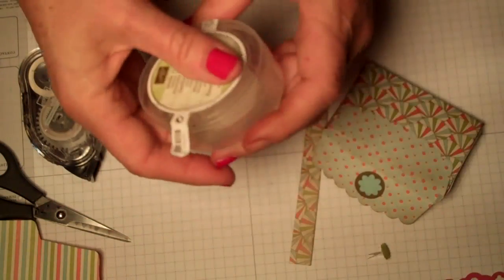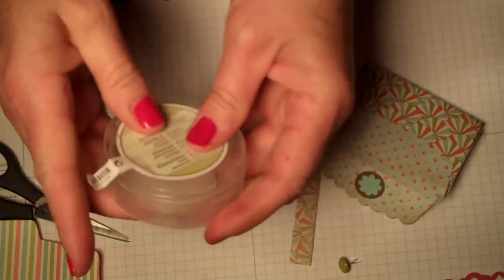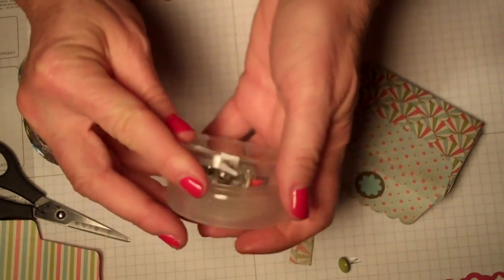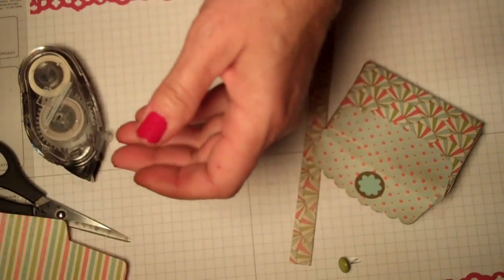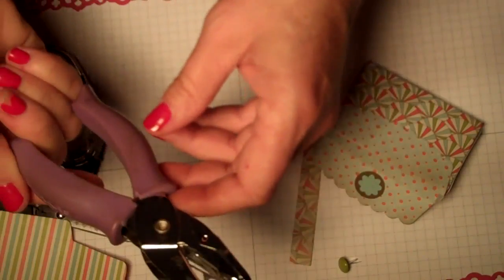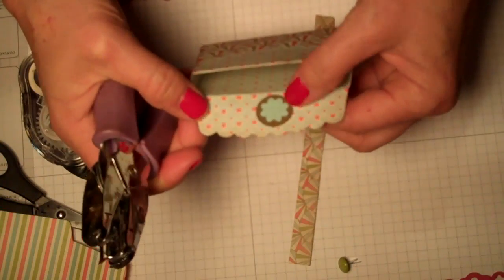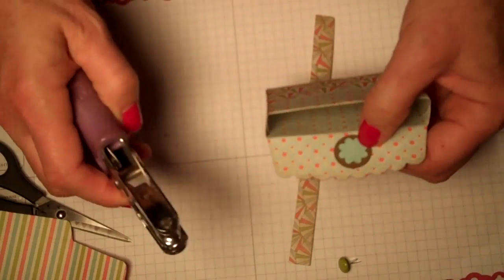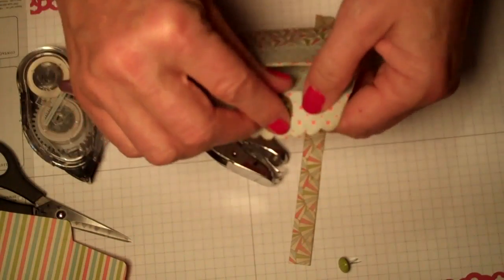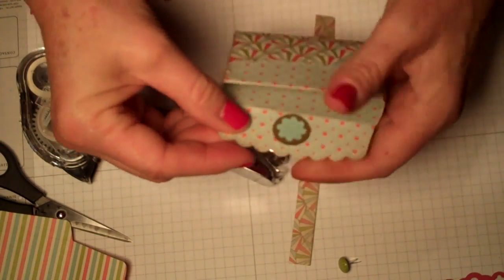And I'm gonna use a hole punch, a 16th hole punch. You can use the little bit bigger one or a paper piercer. That's my favorite. Oh boy, that looked like it wasn't lined up so I moved it.